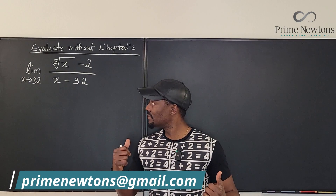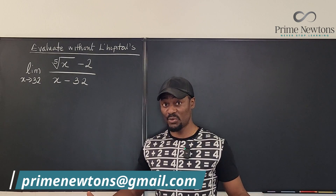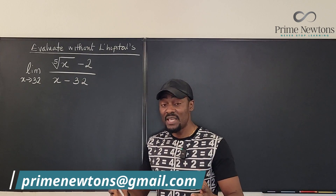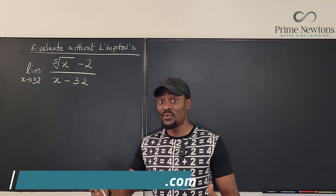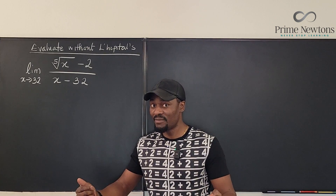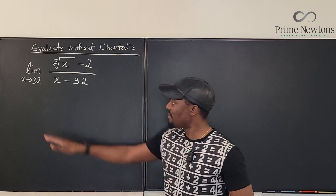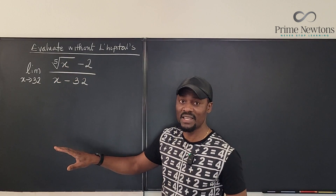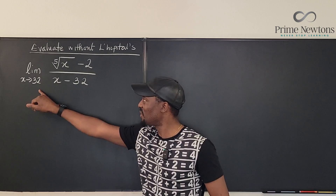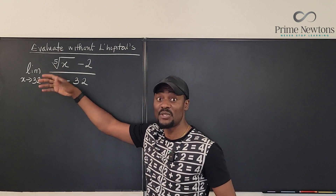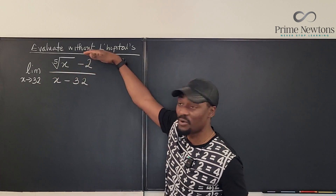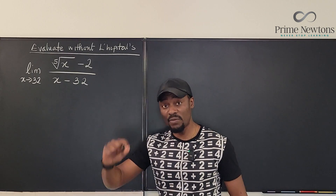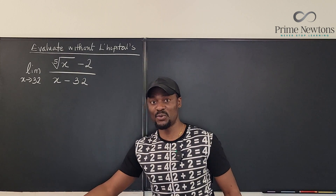Let's evaluate this limit without using L'Hôpital's rule. It's going to be easy or hard depending on what you know. Now, typically when you have something like this, because this is finite, you plug in 32 immediately. But obviously when you plug in 32, the fifth root of 32 is 2. So 2 minus 2 is 0 on top, and 32 minus 32 is 0 on the bottom. So you have 0 over 0, and we cannot use L'Hôpital's rule.